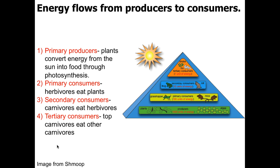The thousand units of energy present in the plants translates to only a hundred units of energy at the primary consumer level, which in turn translates to only ten units at the secondary consumers, and a mere one unit when you get to the tertiary consumers. So within an ecosystem, a very large number of plants and primary consumers can be sustained, but only a small number of tertiary or top-level consumers can be sustained, because there won't be enough energy reaching them if there are too many.